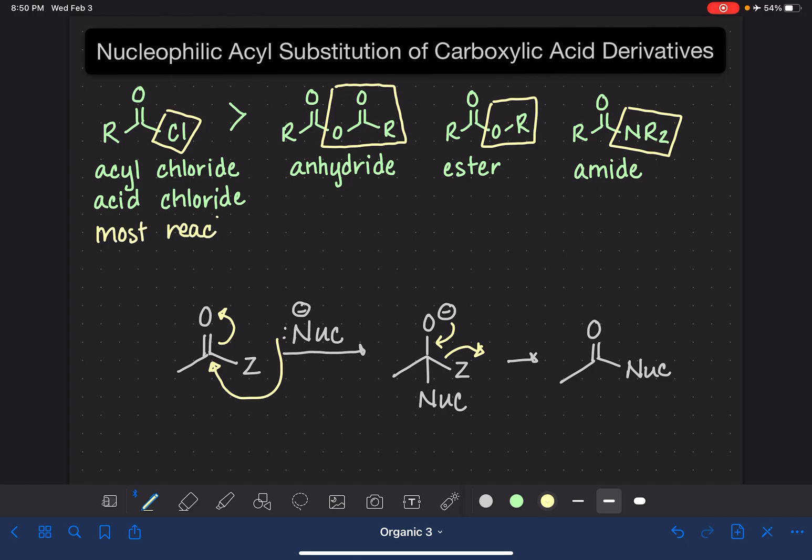And then I wrote these down in order of reactivity. So the anhydride is the next most reactive. This is a really good leaving group because the leaving group is going to be stabilized by resonance.